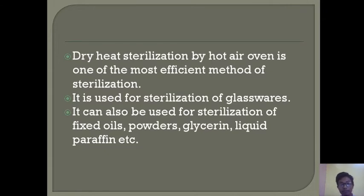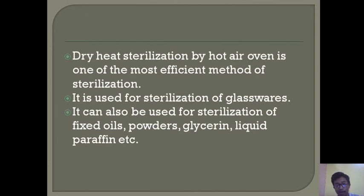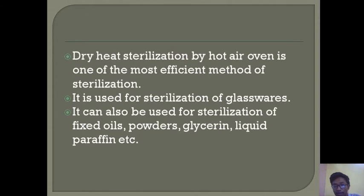So what do we basically understand by a hot air oven? A hot air oven is equipment we use for dry heat sterilization. In a hot air oven, we use hot air to kill the microbes present in different glassware or other kinds of equipment we need to sterilize. Hot air sterilization is one of the most efficient methods of sterilization, mainly employed for sterilization of glassware in pharmaceutical microbiology labs.